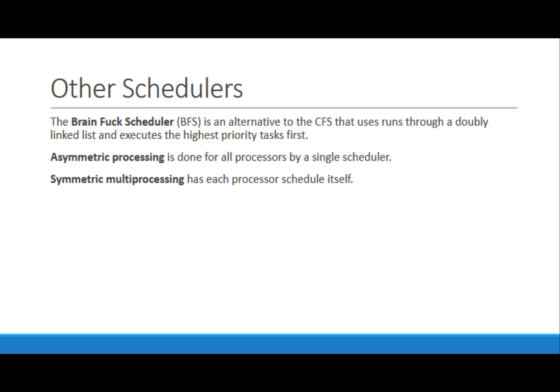While the Completely Fair Scheduler is the default, you can also choose tasks first-in, first-out, which as the name implies executes tasks in the order that they arrive, or round-robin, which assigns time to each process, and as previously stated, if they run out of time before the process is finished, they will go back in the running queue.